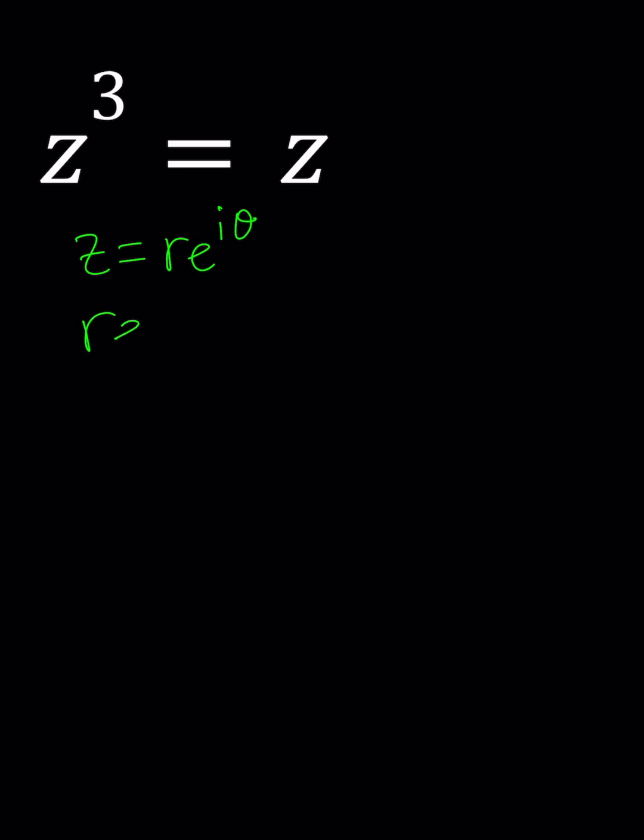When you do this, you're going to get (r e^(iθ))³ equals r e^(iθ). The problem with that approach is you're going to get something like e^(i3θ) equals e^(iθ).